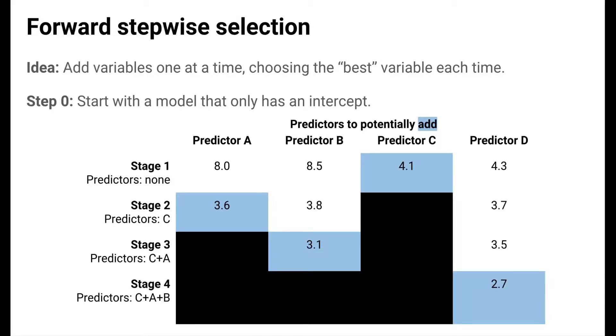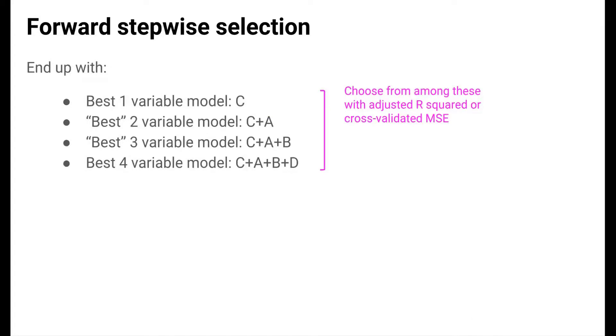And in the last stage, we start with the C plus A plus B model, and we only have D left to consider. So we end up with the best 1, 2, 3, and 4 variable models. And to choose one final model, we can select from among these with adjusted R-squared or cross-validated mean squared error.